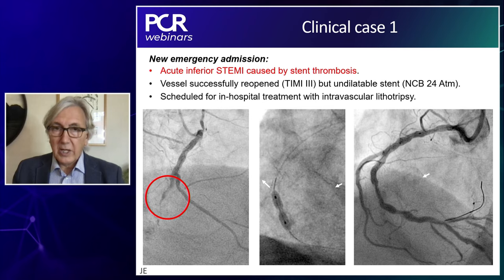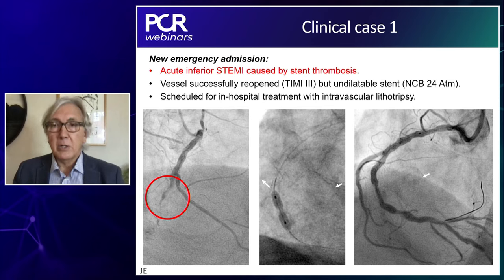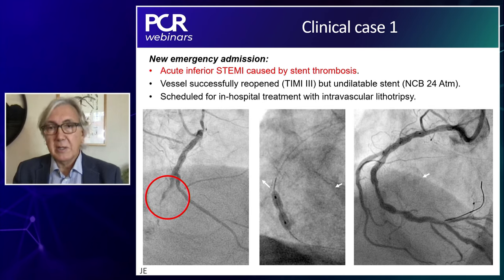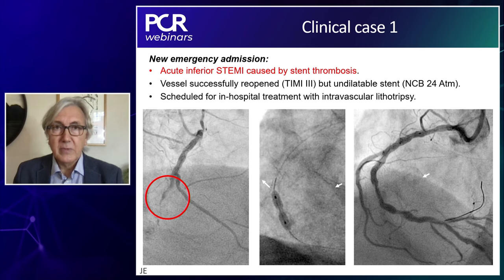You immediately establish the link between the under-expansion and the development of stent thrombosis. Again in the acute setting, the operator tried to open the stent as much as possible, but failed despite using a non-compliant balloon up to 24 atmospheres. It was then decided that the patient would stay in hospital and have a subsequent intervention using a dedicated technique — intravascular lithotripsy — which for this particular indication is off-label.